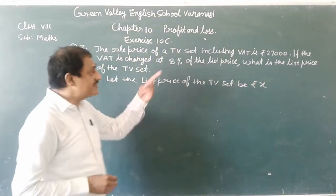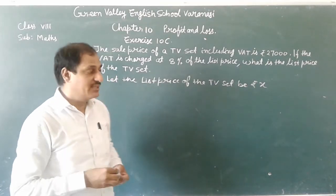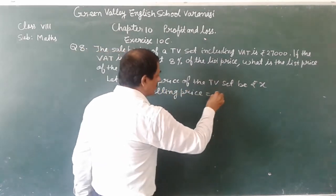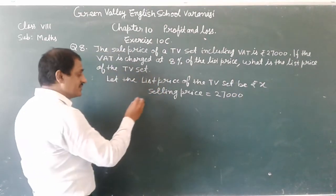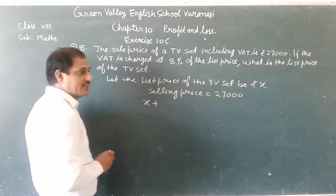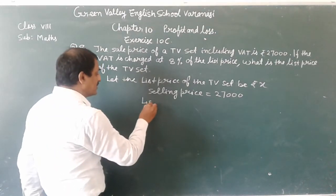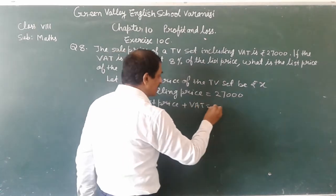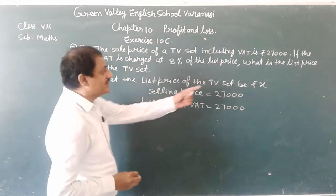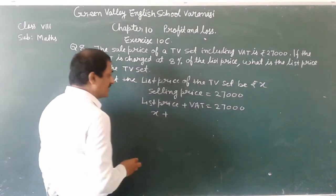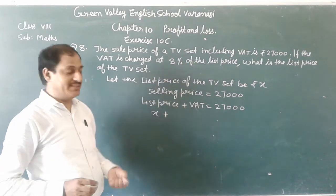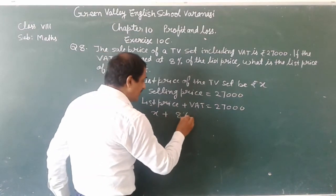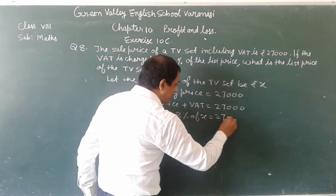Rs 27,000 is the selling price. The list price is X, and the VAT is 8% of the list price. So VAT = 8% of X. Therefore, X plus 8% of X is equal to 27,000.